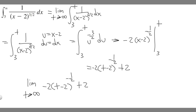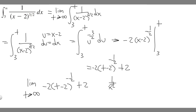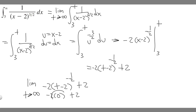Now we evaluate this as a normal limit as t approaches infinity. Plugging in infinity: infinity minus 2 is still infinity, and infinity to the minus 1/2 is the same as 1 over the square root of infinity. The square root of infinity is still a very large number, so 1 over infinity approaches 0. So minus 2 times 0 is 0, and we're left with 0 plus 2, which equals 2.